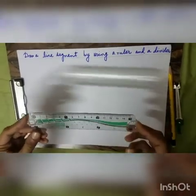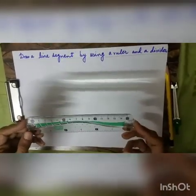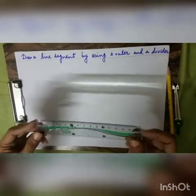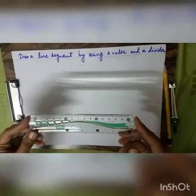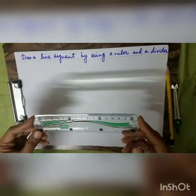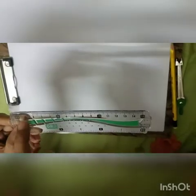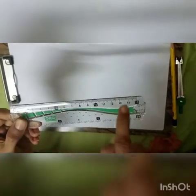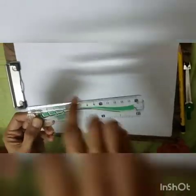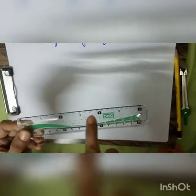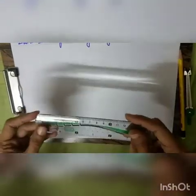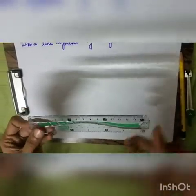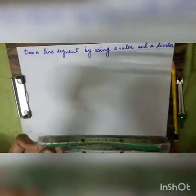A ruler is also called a scale. It is a very essential tool in our geometry box, which is used in almost all constructions. It has small divisions from 0 to 1, 1 to 2 — all in centimeters — while on the other edge the small divisions are in inches.